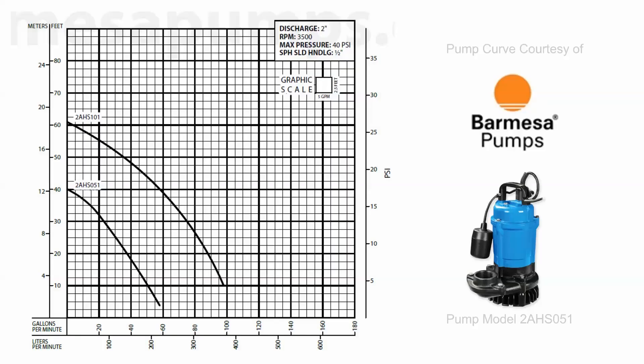Let's take a look at a real pump curve. In this particular example we have a Bar Mesa pump curve. This is a curve for the two AHS series pumps — it features both the half horsepower and one horsepower performance curves of these particular pumps. It's pretty interesting to see how from half horsepower to one horsepower you're increasing both the pump's maximum pressure rating, which is indicated on the left-hand side by feet and meters.